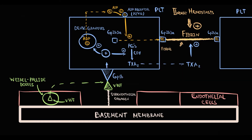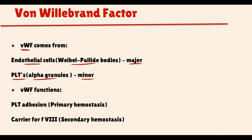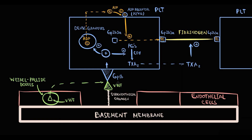So secondary hemostasis converts the platelet plug into a thrombus. To assess the extrinsic pathway, we use prothrombin time and international normalized ratio. For assessment of the intrinsic pathway, we use partial thromboplastin time. The major function of von Willebrand factor is to provide platelet adhesion in primary hemostasis — von Willebrand factor helps platelets bind to the site of injury, serving as a linkage molecule between the platelet and subendothelial collagen.